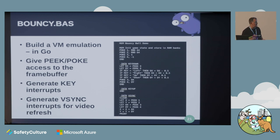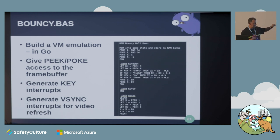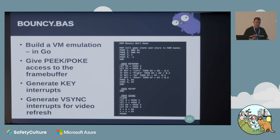The approach I took was to write a virtual machine emulator in Go. It's basically just mapping a frame buffer, creating an animation loop, and loading in the BASIC interpreter to run some instructions. On the right-hand side there's an example BASIC program that animates a bouncing ball around the screen. To hook that into the virtual machine emulator, I extended the BASIC interpreter to enable reading and writing to the frame buffer, added key interrupt input, and a vertical sync interrupt to tell the BASIC program the animation cycle is complete.